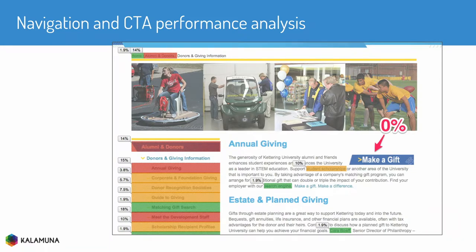All the links on the page add up to 100% and get divided across all the different links, so you can see which ones are more popular. In this case, we were doing some analysis on a university website. They were motivated to get people to donate. They had created these buttons labeled 'make a gift' that no one was clicking on because they were poorly designed. This is a powerful way of illustrating that in a rather intuitive manner — it's motivating action to redesign a button or think about a new paradigm for donations.